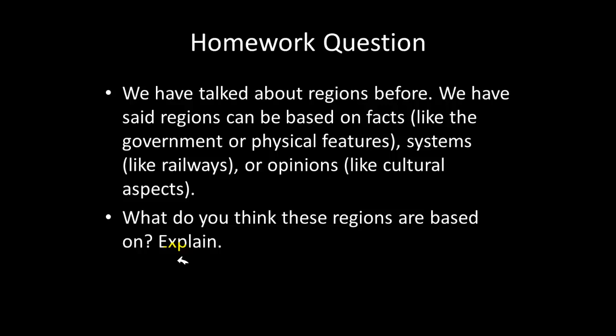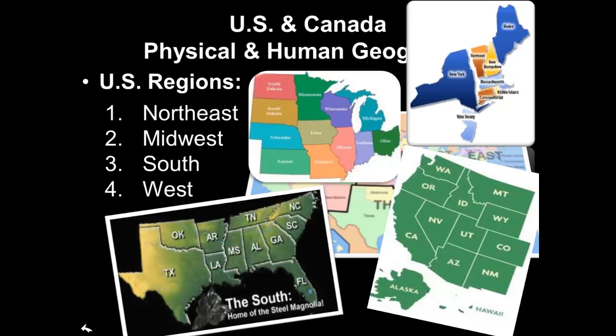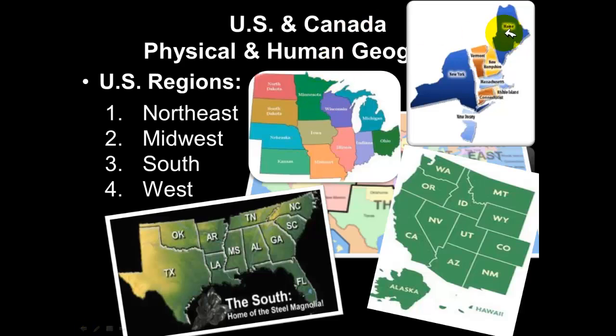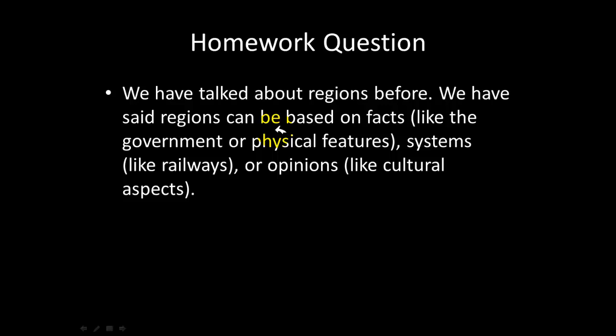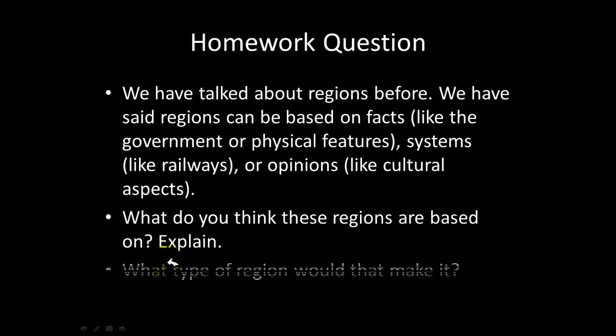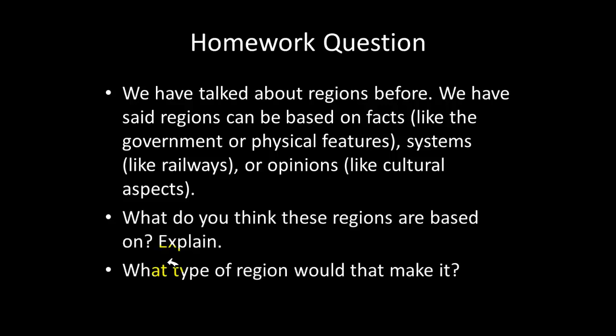There are homework questions in your notes guides — make sure you are answering them for full credit. We've talked about how regions can be based on facts like government or physical features, systems like railways, or opinions like cultural aspects. When we talk about the regions of the United States — the Northeast, West, Midwest, and South — which do you think these regions are based on? Are they based on facts, systems, or opinions? And depending on how you answer, what type of region is it?